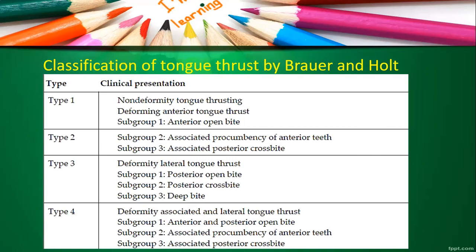Under Type 3 (lateral tongue thrust): subgroup 1 is posterior open bite, subgroup 2 is posterior crossbite, and subgroup 3 is deep bite. Type 4 is deforming anterior and lateral tongue thrust combined — subgroup 1 is anterior and posterior open bite, subgroup 2 is procumbency of anterior teeth, subgroup 3 is posterior crossbite. There is also a classification of simple tongue thrust and complex tongue thrust.